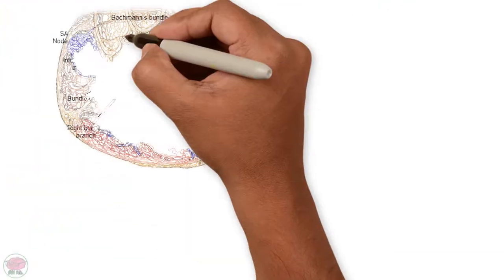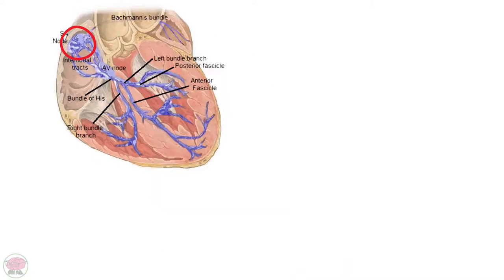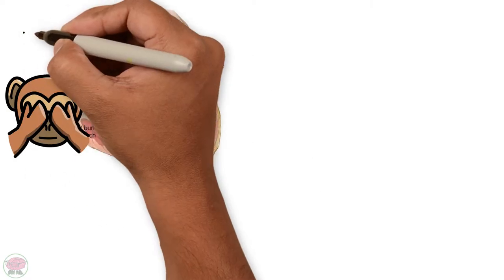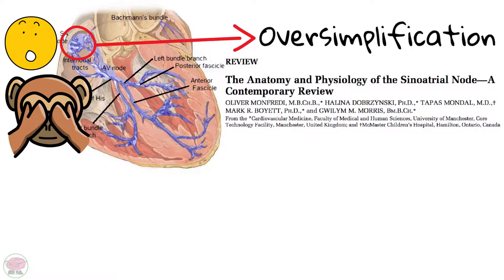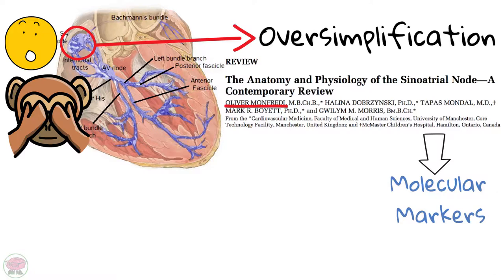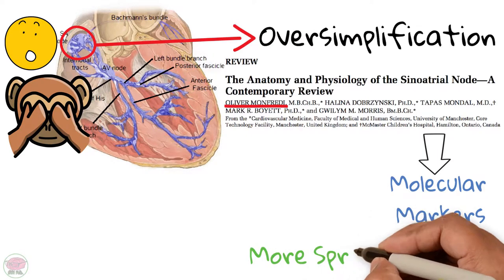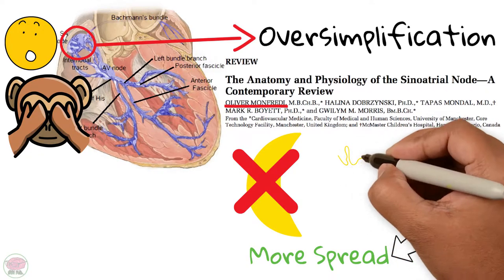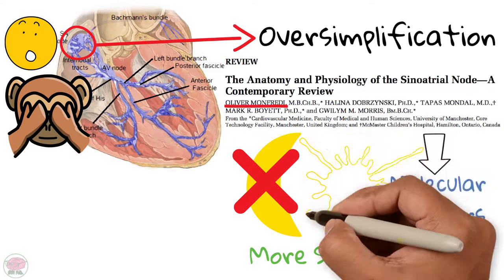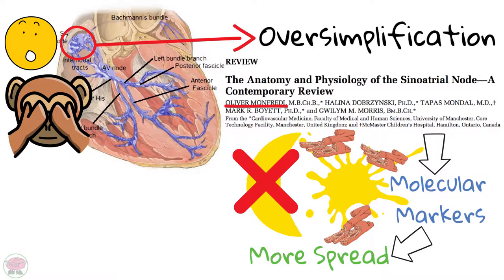You may remember seeing this node in many textbooks, but did you know that depiction is completely wrong? It's an oversimplification of the true structure of the sinoatrial node. A review by Oliver Monfredi and collaborators explains that molecular markers used to map the extent of the node have shown that the pacemaker tissue is more spread in the right atrium than previously appreciated. The node is not completely encapsulated as a compact structure; rather, it has multiple radiations of nodal tissue that extend like fingers and mix with normal myocardial cells.